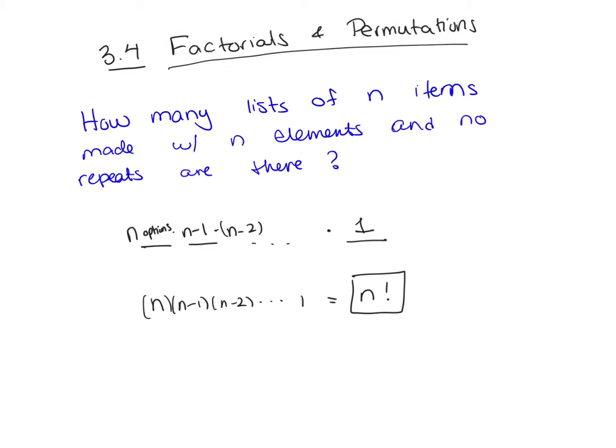So we're going to define here n factorial. We're actually going to define it in terms of this concept. It's the number of lists with n items pulled from a set of n elements, and there's no repeats, so it's the way to rearrange these n items. But we know that it's going to be equal to n times n minus 1 times n minus 2, all the way down to 1 because of this multiplication principle. So let's look at that formal definition on the next page.